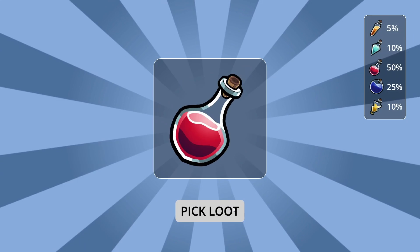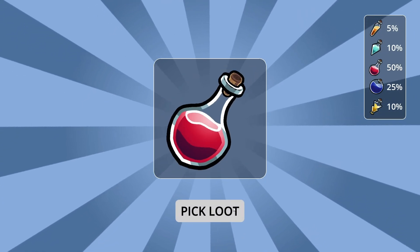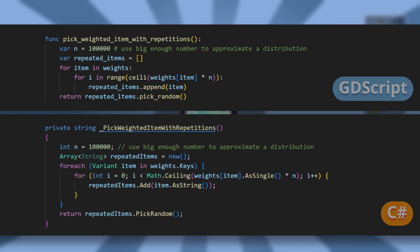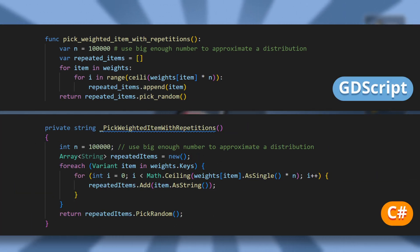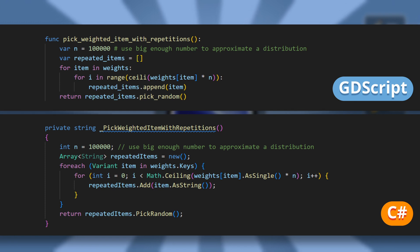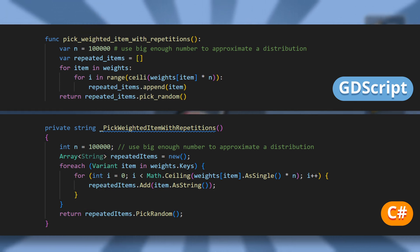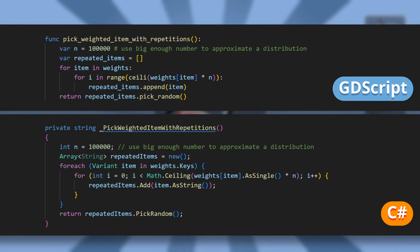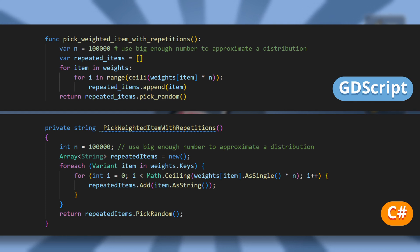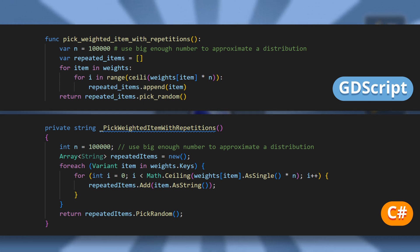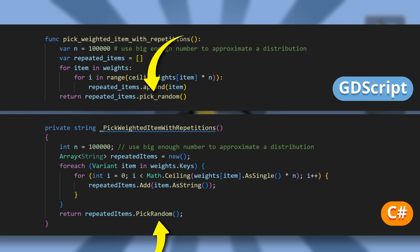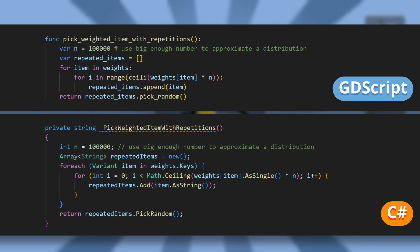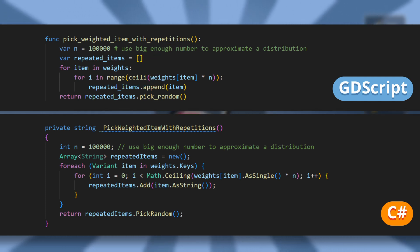But there's another trick that I love to use, because I actually find it way more intuitive. And that's to repeat your possible items more or less depending on the weight you want to give them. Basically, if you use enough repetitions overall, then you'll approximate a non-uniform distribution of your items, meaning that picking something at random the normal way, in this new repeated array, is like applying weighted random on your original one.